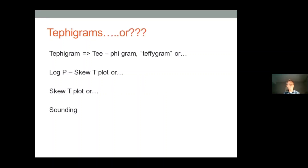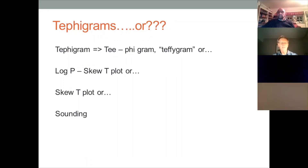What are they called? I'm calling them tephigrams. The word 'tephi' is a contraction — T being temperature, phi being a thermodynamic quantity which means energy. They're sometimes called log-P skew-T — log-P being pressure, skew-T being temperature — or they're sometimes just called a sounding. RASP calls it a sounding; SkySight calls it a skew-T. They're all pretty much the same thing.